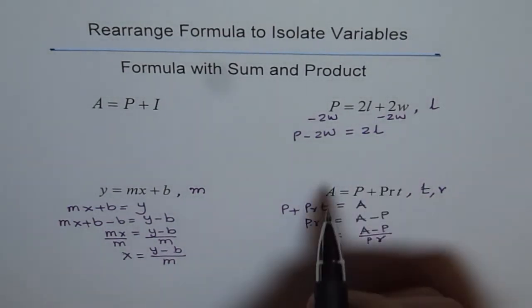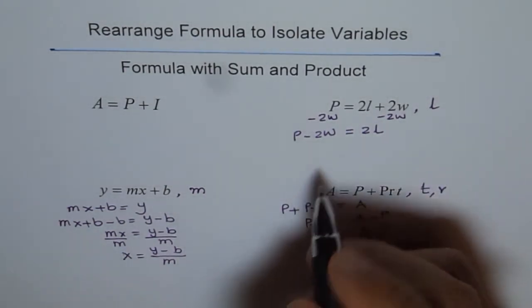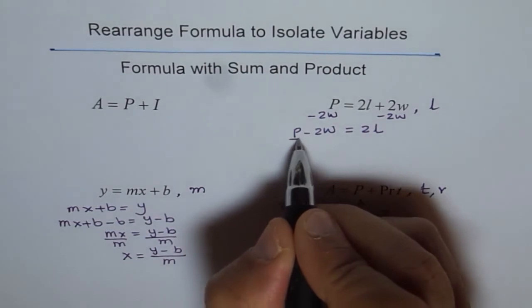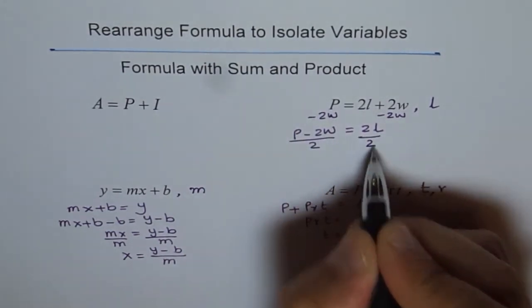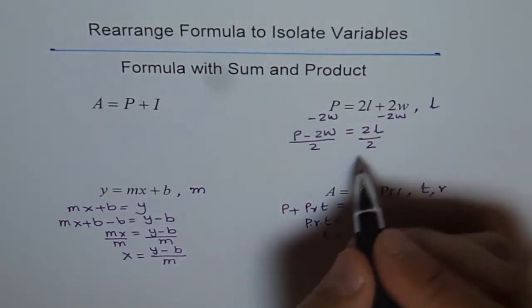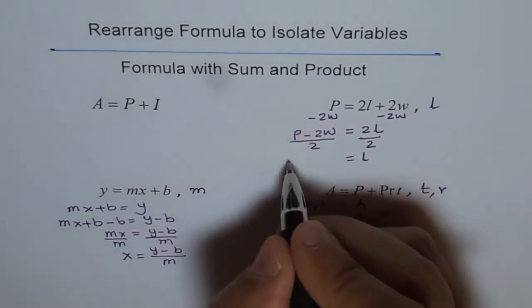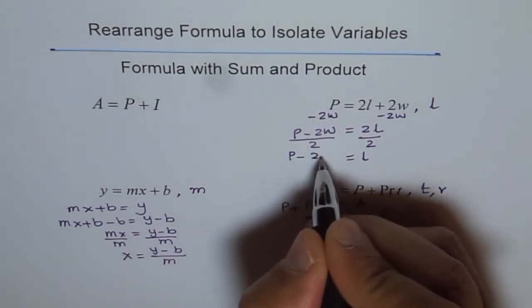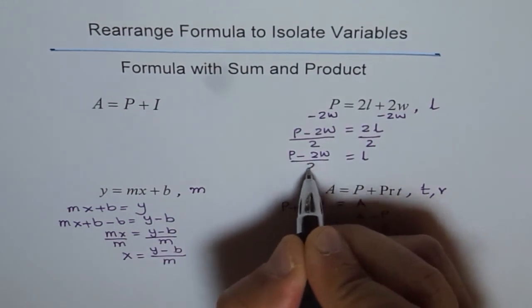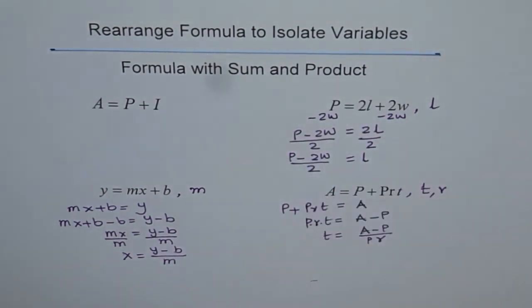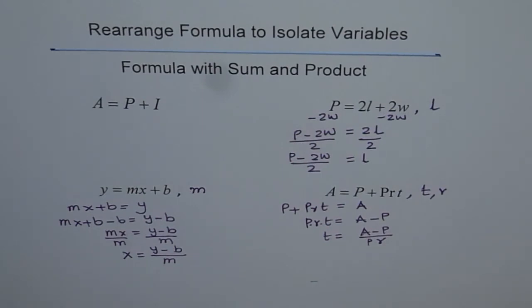We actually want length. So, we have to divide by 2 on both sides. So, let's divide by 2 on both sides. So, we do divide by 2, divide by 2. That is the next step. So, you get length equals to perimeter minus 2W divided by 2. So, that becomes your formula for length. Do you see that? That is how you will isolate length.